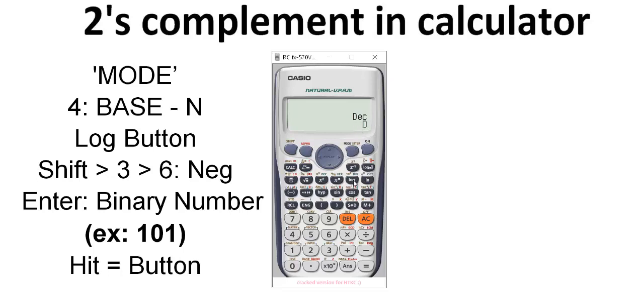So press the log button. Now go to the shift button. And then press the button number 3. Then select the 6 number option negative. So press 6.